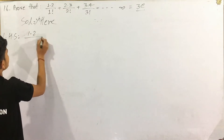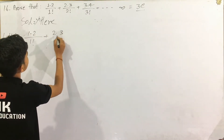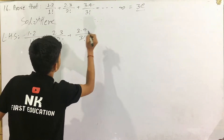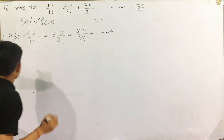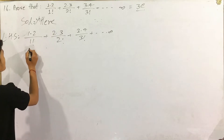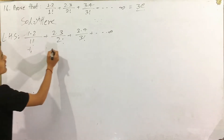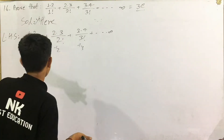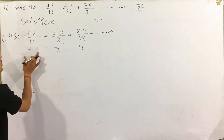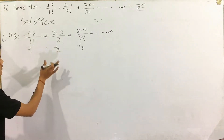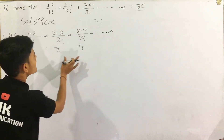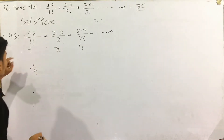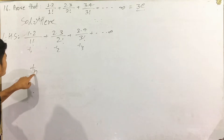LHS is equal to 1 into 2 into 5, 2 into 3 by 2 factorial, plus 3 into 4 — this goes to infinity. In this series we can use T1, T2, T3 — we can use the Tn formula. The ratio is the same.